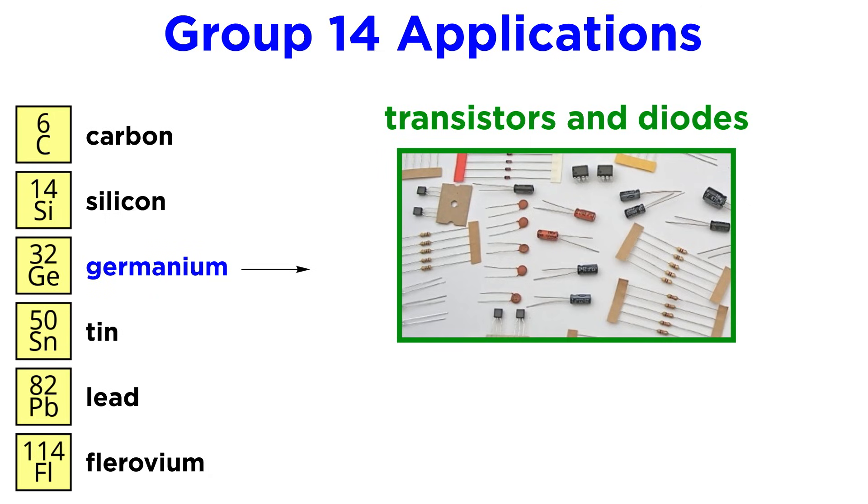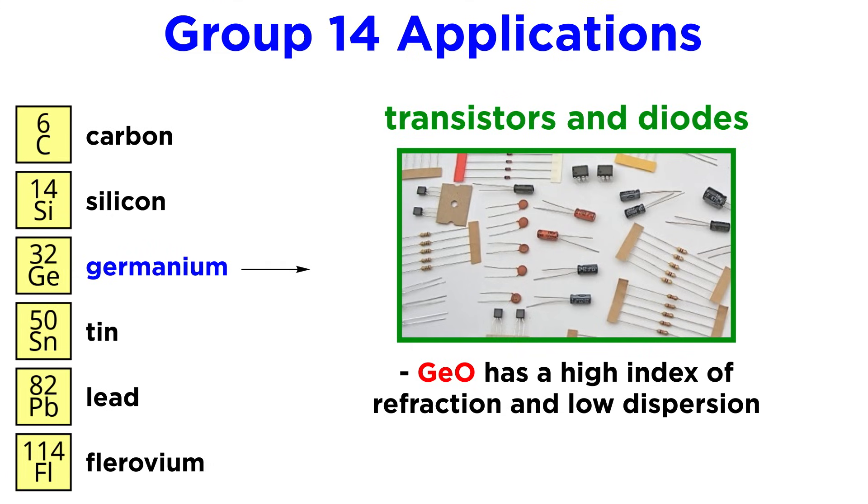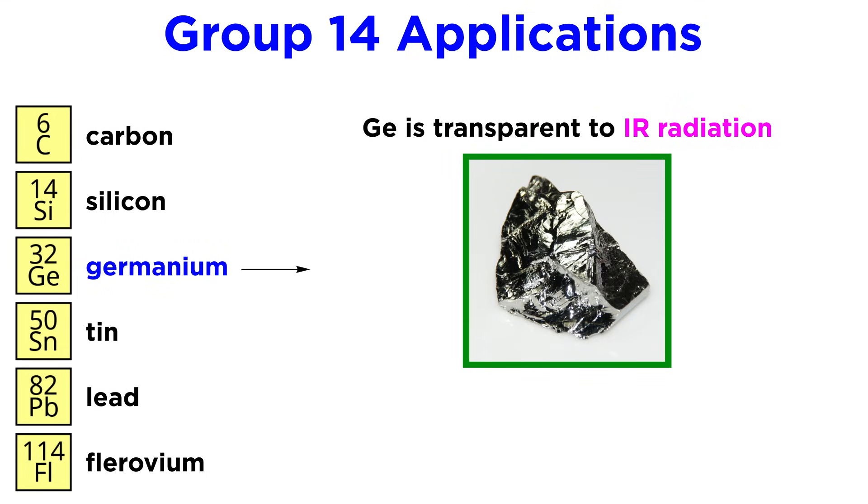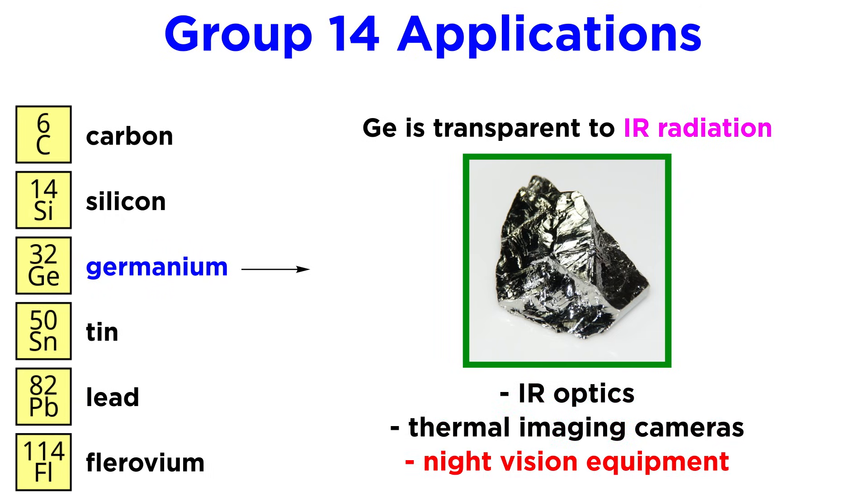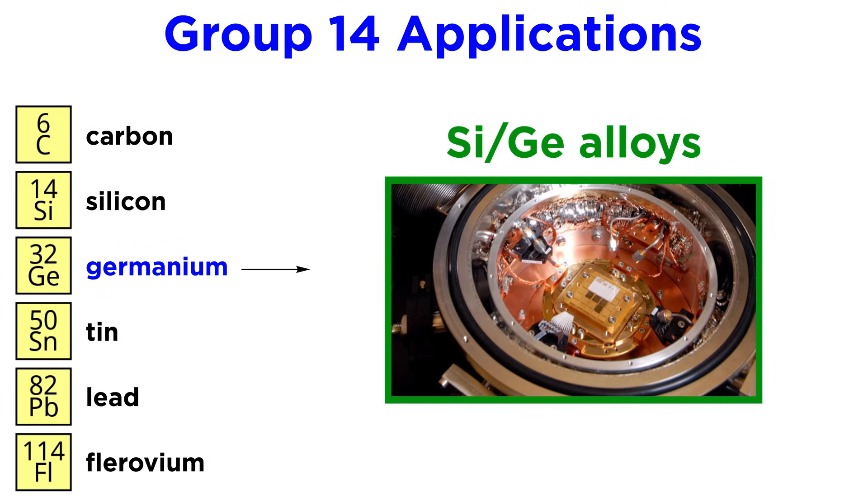Germanium first found application in transistors and diodes. Germanium oxide has a high index of refraction and low dispersion, so it is essential in keeping light within fiber optics. For this reason it has replaced titanium oxide in glass for fiber optics. Germanium is also transparent to infrared electromagnetic radiation, so it is used for IR optics, thermal imaging cameras, and night vision equipment. Silicon germanium alloys are also finding use in microchips.